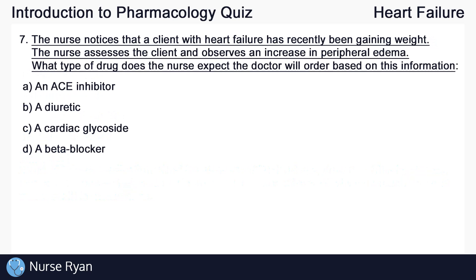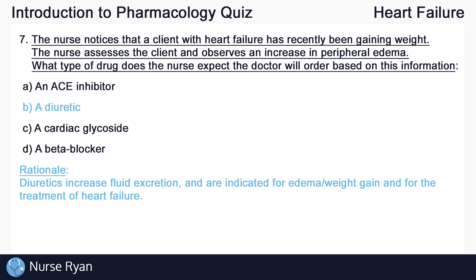Question number seven: the nurse notices that a client with heart failure has recently been gaining weight. The nurse assesses the client and observes an increase in peripheral edema. Which type of drug does the nurse expect the doctor will order based on this information? The answer here is B, a diuretic. Diuretics increase fluid excretion and are indicated for edema, weight gain, and for the treatment of heart failure.